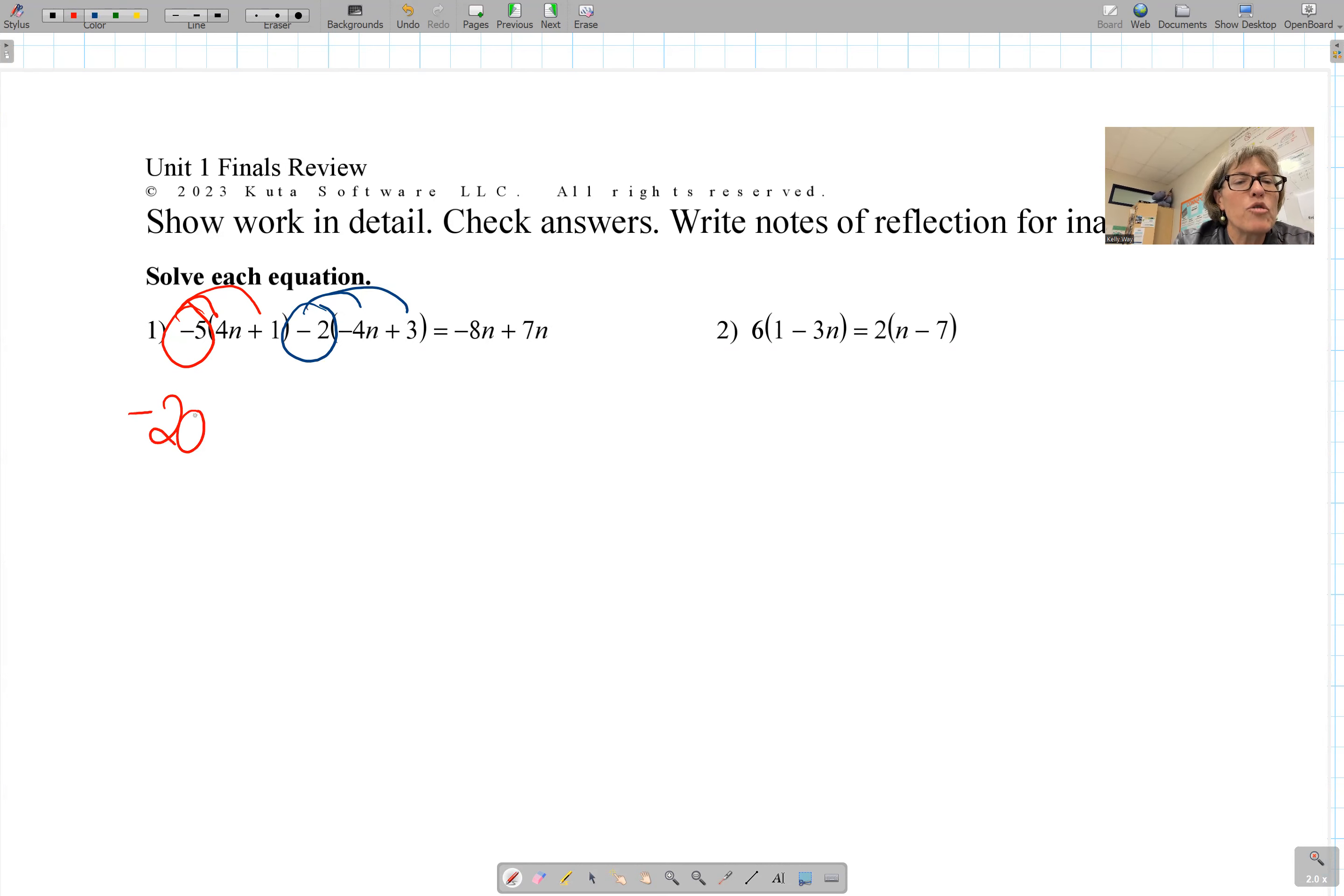So we have -20n, it's going to be minus 5. And the negative times a negative is going to be positive. So positive 8n - 6 = -8n + 7n. Do physical collect, where you collect like terms on both sides, and then solve for the variable.